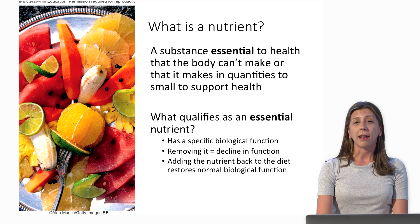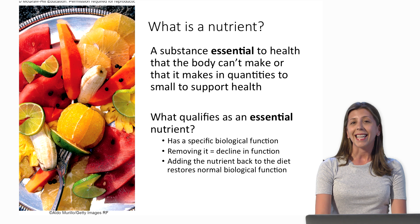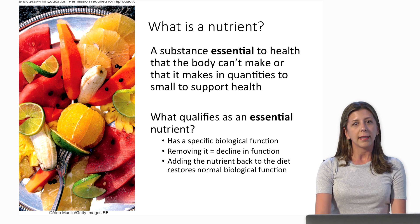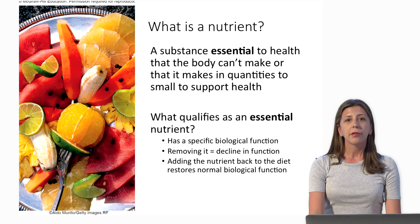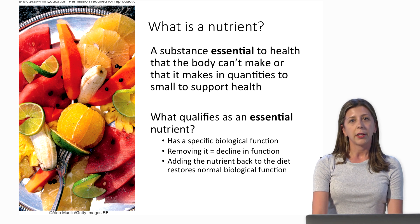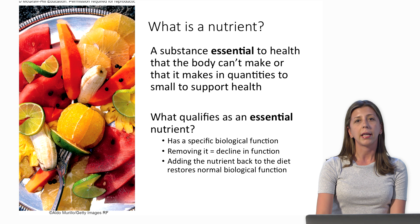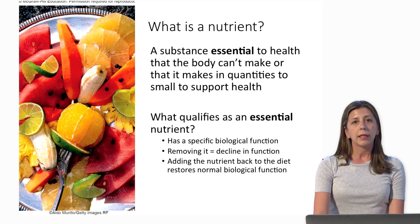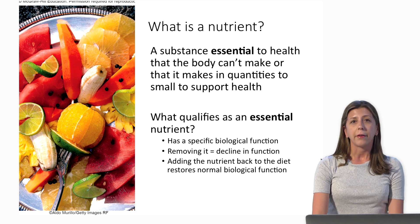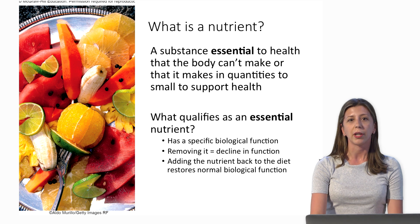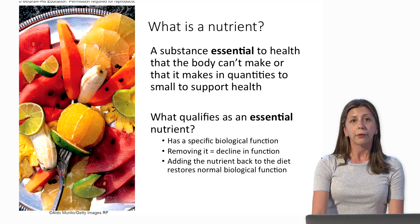So what is a nutrient? A nutrient is defined as a substance that's essential to health that the body can't make, or that it makes in quantities too small to support health. Three main things qualify as an essential nutrient: it must have a specific biological function — for example, carbohydrates break down into glucose and provide energy to all cells. Second, when we remove an essential nutrient from our diet we decline in function. And finally, when we add the nutrient back to our diet, that restores normal biological function.